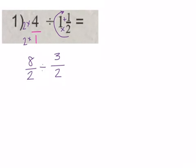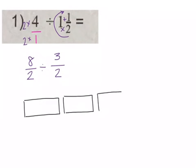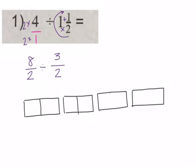Now we can start to draw our model. Originally we had four wholes, so I'm going to draw four whole rectangles — it's easier if you draw them next to each other, roughly the same size. Now I need to cut each of them in half because I have eight halves, so everything should be modeled in halves. I'm going to cut each of these in half.